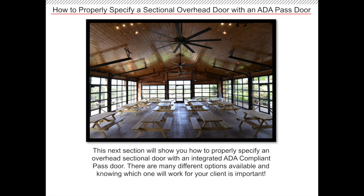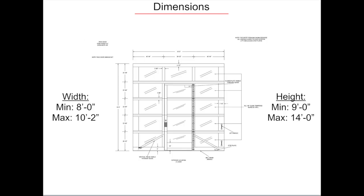Now we'll go into how to properly specify an overhead sectional door with an integrated pass door. There are many different options and knowing which works best for your project is important. This product will have restrictions on dimensions. The minimum width of the overhead door is 8 foot and the maximum is 10 foot 2. This is to uphold the structural integrity of the door.